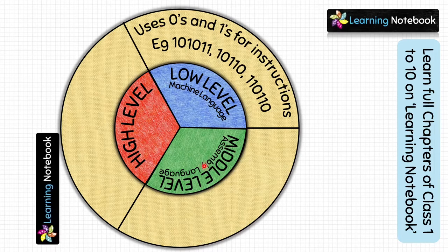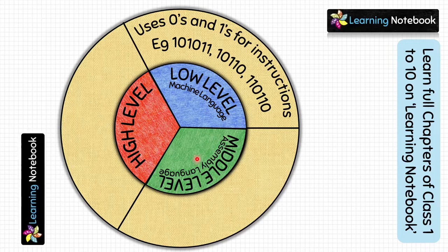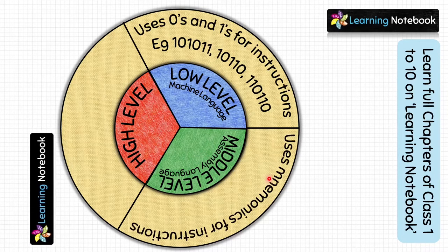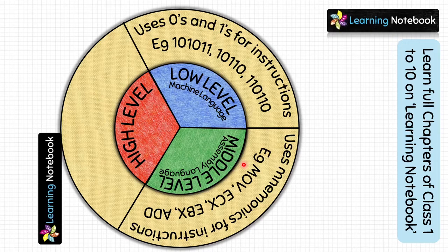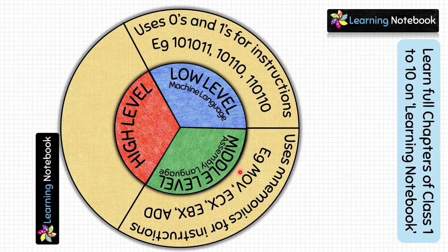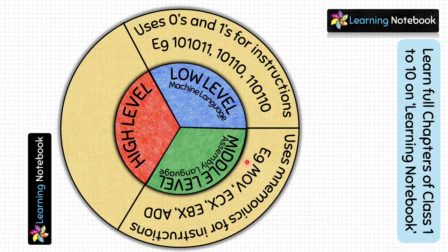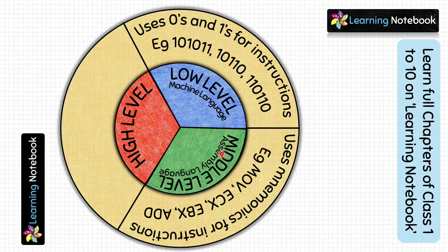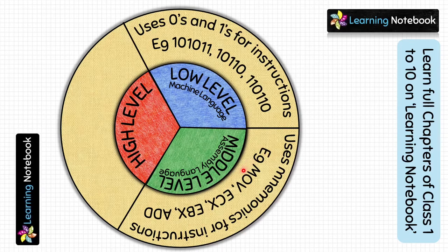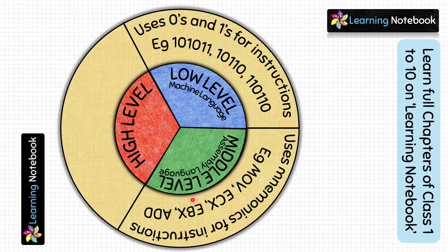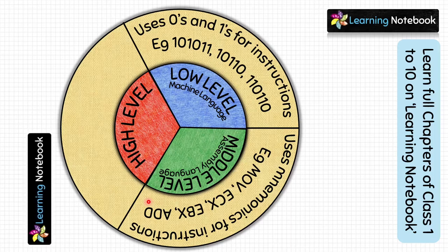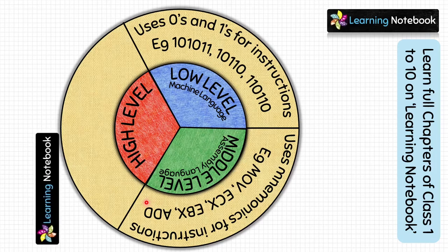Next, write about middle level language, also known as assembly language. This language uses mnemonics for instructions — keywords used to instruct the computer to perform certain tasks. Since it was difficult to give instructions only in 0 and 1, middle level language was developed with pre-built keywords. For example: MOV, CX, EBX, ADD — these are pre-built keywords for middle level language.